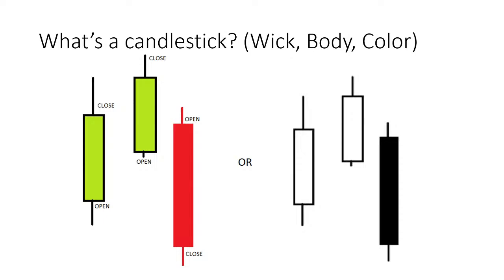What are the basic components? We've got the body of the candle. The bottom of the body is where it opened; the top of the body is where it closed for a green candle. For a red candle, the top of the candle is where it opened and the bottom is where it closed. The wick represents the absolute lowest price of the day. So if the price dropped to $4.50 and then closed at $5, that's the difference between the wick and the bottom of that candle.